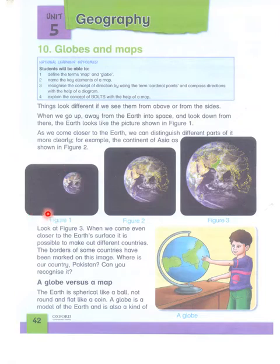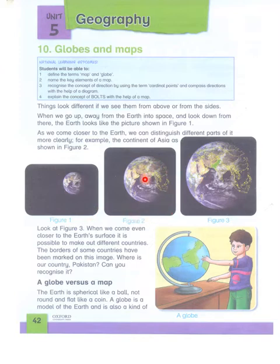If we are far away from the earth in space and look at the earth, we will not be able to see things clearly, but if we come closer then we will be able to see things clearly — for example, the continent of Asia, the Asian continent, we can see on this earth.